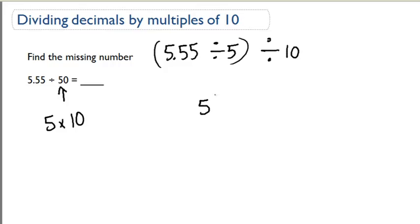Okay, so 5.55 divided by 5. So 5 goes into 5 once, and then I'm left with 0.55. 5 goes into 5 once, and I'm left with 0.05.